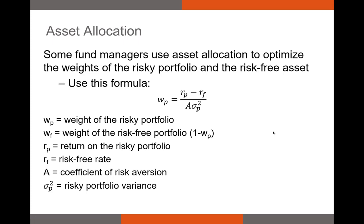How do we determine the ideal weight for our portfolio — the risky stock portfolio versus the risk-free asset? We use the utility function I introduced a few minutes ago. Using basic calculus on that utility function, we can derive a formula. It says the ideal weight assigned to our risky portfolio is equal to the return on our risky portfolio minus the risk-free rate, divided by our coefficient of risk aversion times the variance of our risky portfolio. This tells us how much we should invest in stocks, and one minus this is the weight we assign to our T-bills.